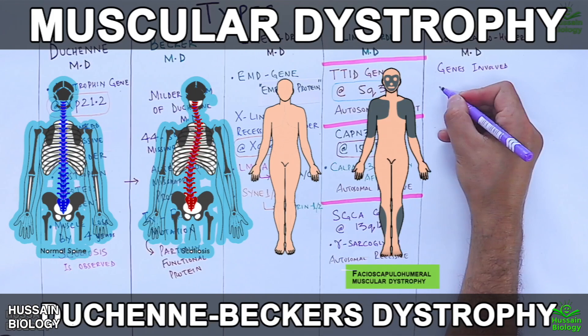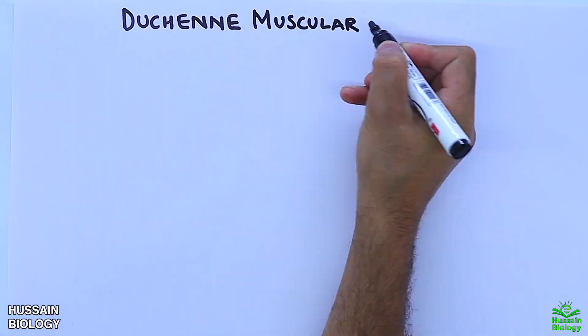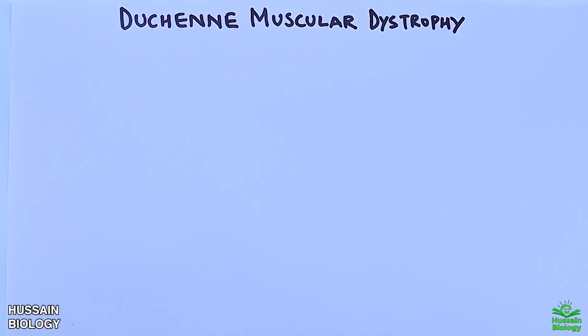In the previous video we discussed about muscular dystrophy and its types. If you want to watch that video first, the link is in the description. Now in this video we'll be discussing about Duchenne muscular dystrophy in detail.